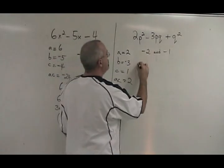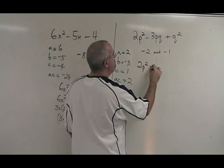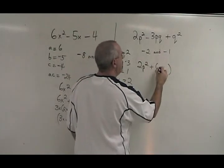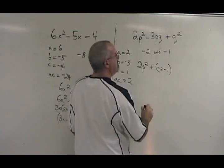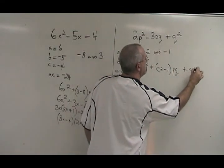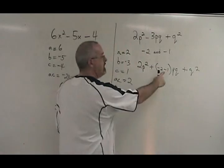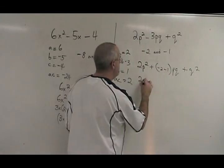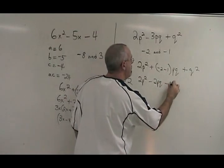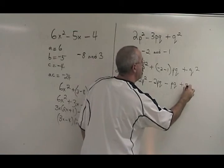We rewrite our question 2p squared. Put a plus. We write negative 2 and negative 1 in the bracket like this. pq plus q squared. We break our bracket up. 2p squared minus 2pq minus 1pq plus q squared.